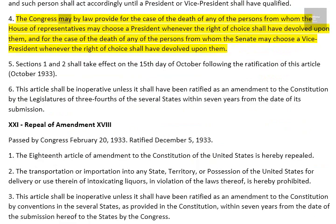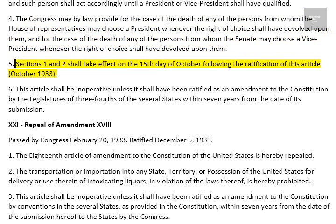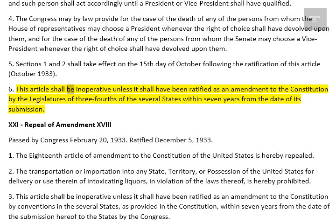4. The Congress may by law provide for the case of the death of any of the persons from whom the House of Representatives may choose a President, whenever the right of choice shall have devolved upon them, and for the case of the death of any of the persons from whom the Senate may choose a Vice President, whenever the right of choice shall have devolved upon them. 5. Sections 1 and 2 shall take effect on the 15th day of October following the ratification of this article, October 1933. 6. This article shall be inoperative unless it shall have been ratified as an amendment to the Constitution by the legislatures of three-fourths of the several states within seven years from the date of its submission.